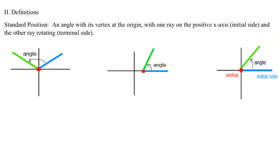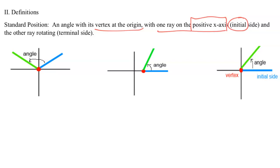Moving into some important definitions. Standard position means that the angle is drawn with its vertex at the origin, with one ray on the positive x-axis — that would be the initial side. The initial side is always on the positive x-axis, and then the terminal side rotates into a quadrant. The two things needed for an angle to be in standard position: the vertex is at the origin and the initial side is on the positive x-axis.